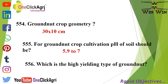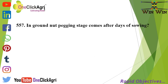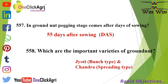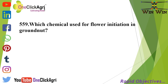Groundnut crop geometry is 30 x 10 cm. For groundnut crop cultivation, pH of soil should be 5.9 to 7. Which is the high-yielding type of groundnut? Spreading type. In groundnut, the pegging stage comes after 55 days of sowing. Important varieties of groundnut are Jyoti and Chandra — Jyoti is bunch type and Chandra is spreading type.